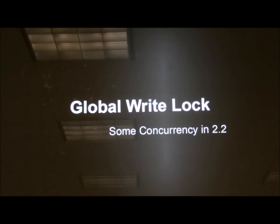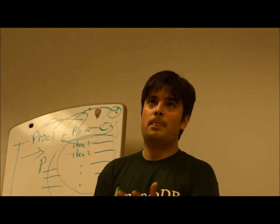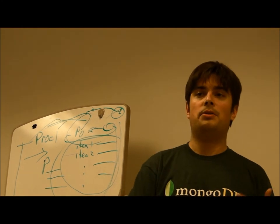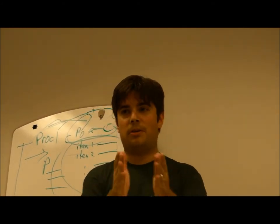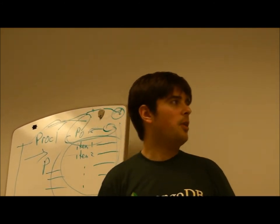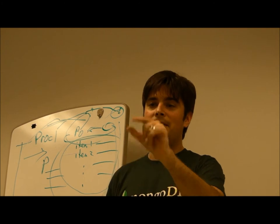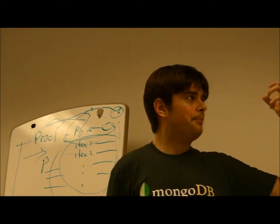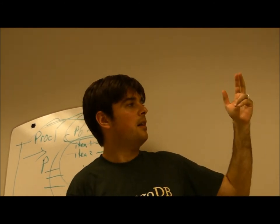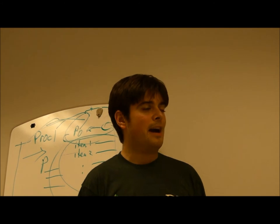There's a global write lock — one of the things that scares people off. Every time you write something to MongoDB, up until version 2.2, it locked that entire database — every collection got locked. These inserts were usually really fast because generally you don't have transactions in MongoDB. So it did lock the database, but inserts were really fast and it wasn't that much of a problem usually.